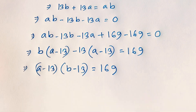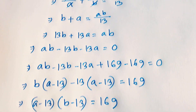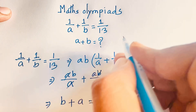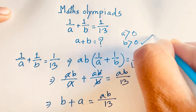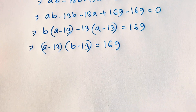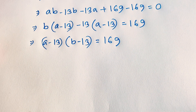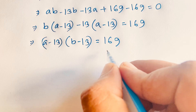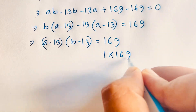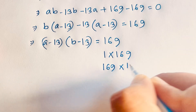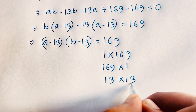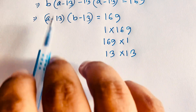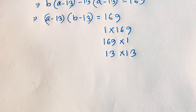Our question is 1 over a plus 1 over b equals 1 over 13, and a plus b equals what. Remember that a is greater than 0 and b is greater than 0, so a and b are positive integers. Therefore (a minus 13)(b minus 13) equals 169, and we find the factor pairs: 1 times 169, 169 times 1, or 13 times 13. So we have three cases.